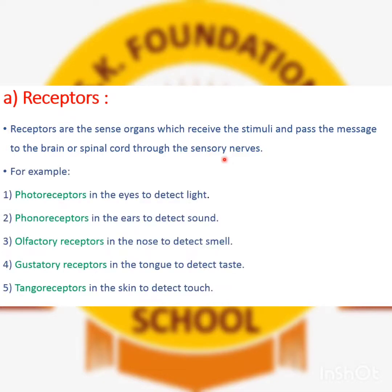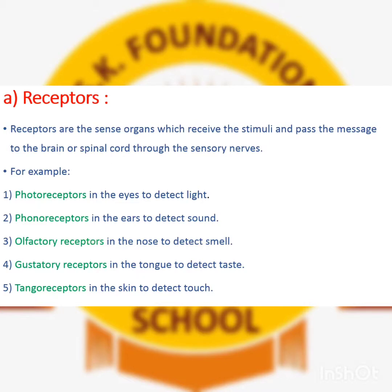For example, the sense organs are eye, ear, nose, tongue, and skin. Eyes detect light with the help of photoreceptors. Ears detect sound with phonoreceptors. The nose detects smell using olfactory receptors. The tongue detects taste with gustatory receptors. Skin detects touch using tangoreceptors. These five are the various types of sense organs along with their respective receptors.